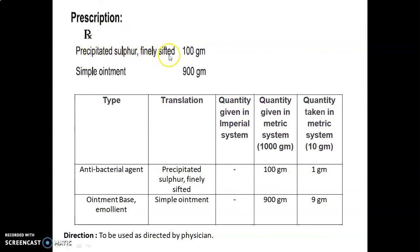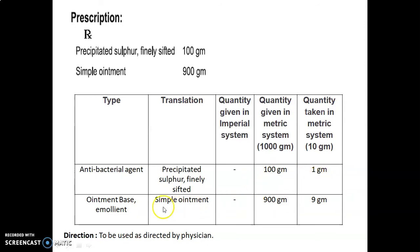The prescription (Rx) formula: precipitated sulfur, finely sifted, 100 gram, and simple ointment 900 gram, to prepare up to 1000 gram. Quantity taken for 10 gram: precipitated sulfur (finely sifted), used as an antibacterial agent, quantity given is 100 gram, so quantity taken is 1 gram. Simple ointment is used as an ointment base and emollient; quantity given is 900 gram, so quantity taken should be 9 gram. Direction: to be used as directed by physician.